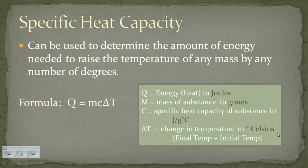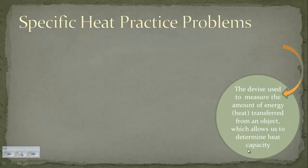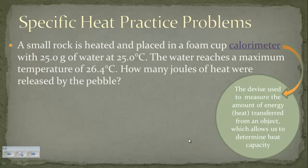To calculate delta T, you take the final temperature of the substance and subtract the initial temperature. That gives you the change in temperature.